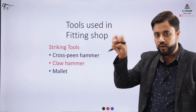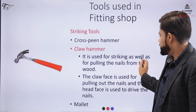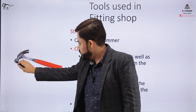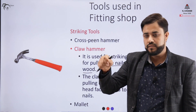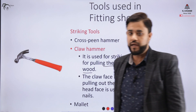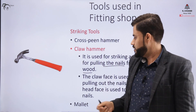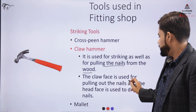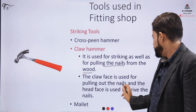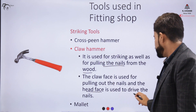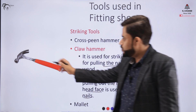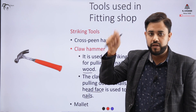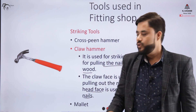The claw hammer, as the name indicates, has a claw-shaped back surface. It is used for striking as well as pulling nails from wood. The front face is used to strike the surface and drive nails in, while the claw-shaped back end is used to pull nails out of the wood.